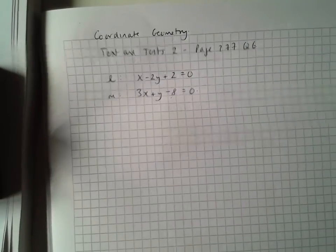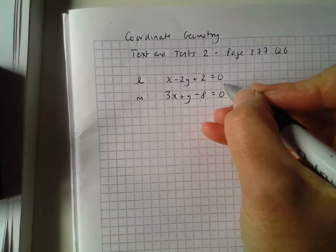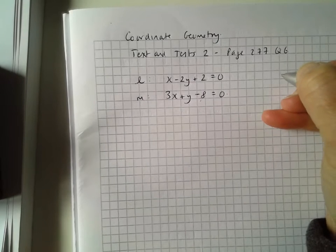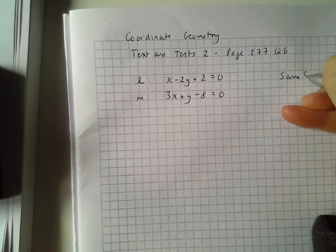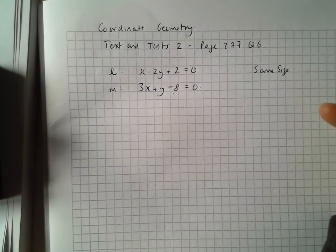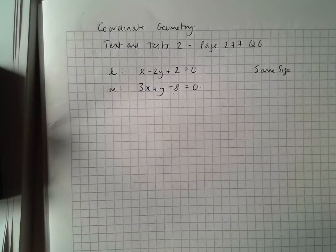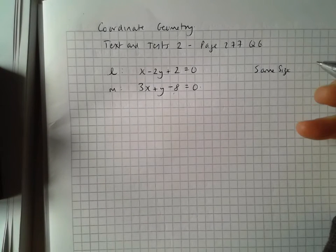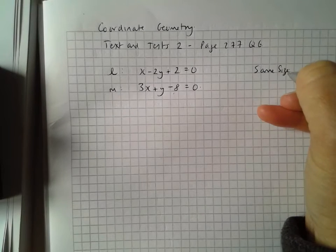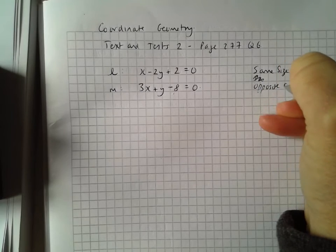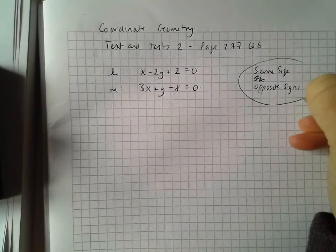So here I have my two equations written down. L is x minus 2y plus 2 equals 0, and M is 3x plus y minus 8 equals 0. Remember, when we're doing simultaneous equations, we want to get one of the coefficients — one of the letters — gone out of the equations. We want to get one equation with one letter. We want to get rid of one of the letters, and we get them to be the same size and opposite signs.